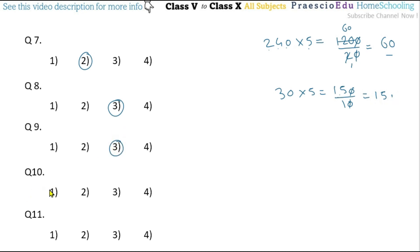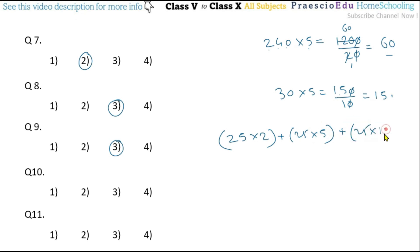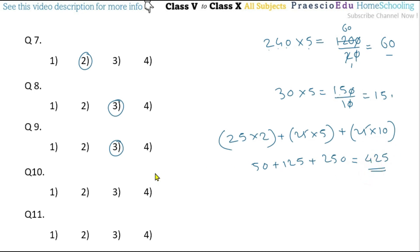Question number ten: If 25 coins each of rupees 2, rupees 5, and rupees 10 are taken, what is the total amount? So 25 multiplied by 2 equals 50, plus 25 multiplied by 5 equals 125, plus 25 multiplied by 10 equals 250. Total: 50 plus 125 plus 250 equals rupees 425. This is given in option number four.